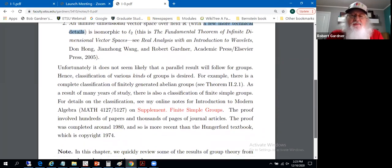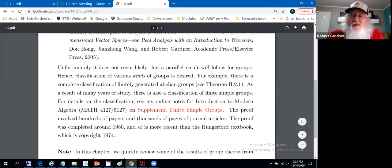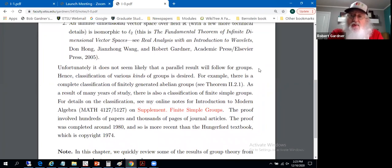But it seems there's no such parallel result for groups. So giving a straight up classification of all groups, unlikely. So what we'll settle for is classification of certain kinds of groups in Chapter 2, Theorem 2.2.1. We'll classify finitely generated abelian groups.